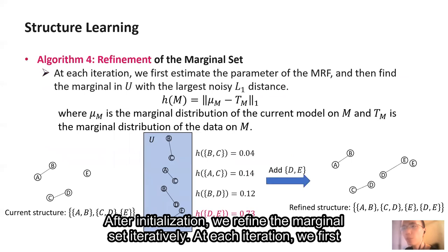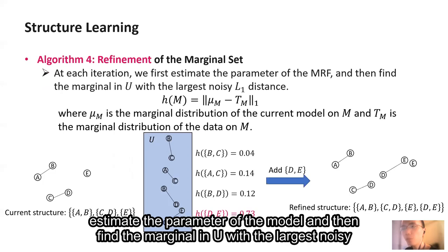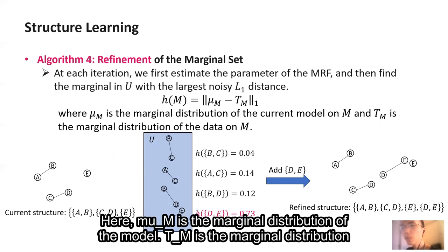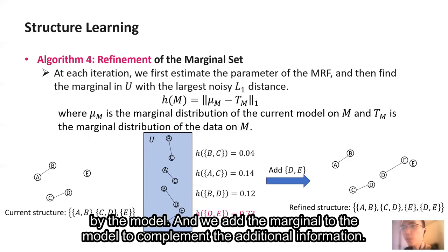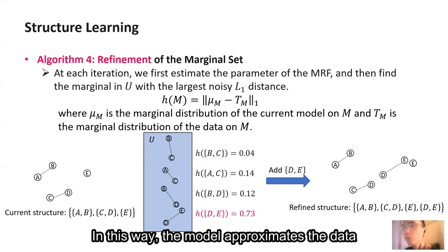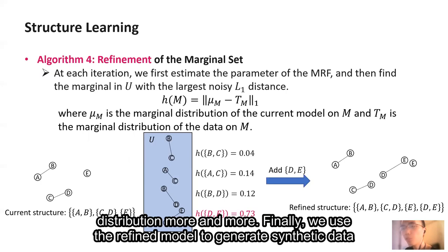For the initialization of the marginal set, we select a marginal for each attribute. We may view the marginals as features, which provide basic descriptions for attributes. We reuse the R-scores to measure the performance of the features. After initialization, we refine the marginal set iteratively. At each iteration, we first estimate the parameter of the model and then find the marginal in U with the largest noisy L1 distance. Here, mu M is the marginal distribution of the model, and T M is the marginal distribution of the data. So a large L1 distance means the marginal may not be captured properly by the model. And we add the marginal to the model to complement the additional information. In this way, the model approximates the data distribution more and more. Finally, we use the refined model to generate synthetic data.